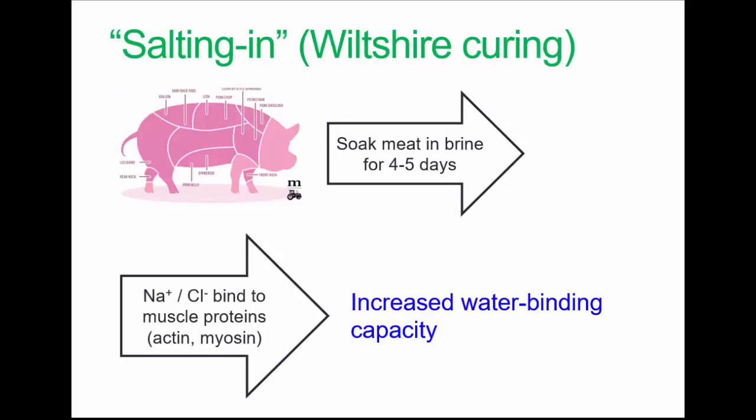Here's one example: Wiltshire curing. It's a method of curing bacon that was developed by the Harris family around 1843. Carcasses are injected with a mixture of salt and saltpeter—that is potassium nitrate—then liberally sprinkled with the same mixture and stacked for 21 days. This is associated with increasing the water binding capacity, so it contributes to ham having a moist mouthfeel.